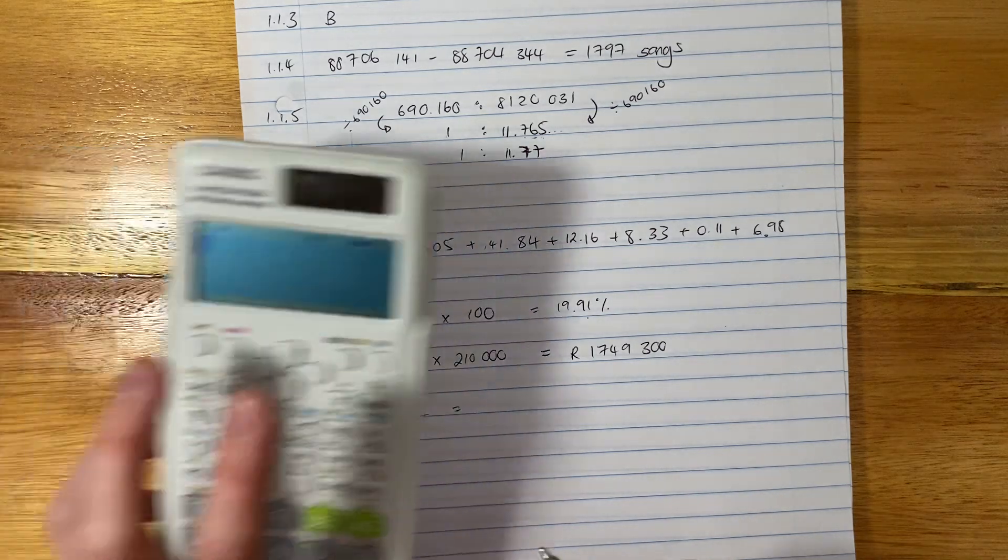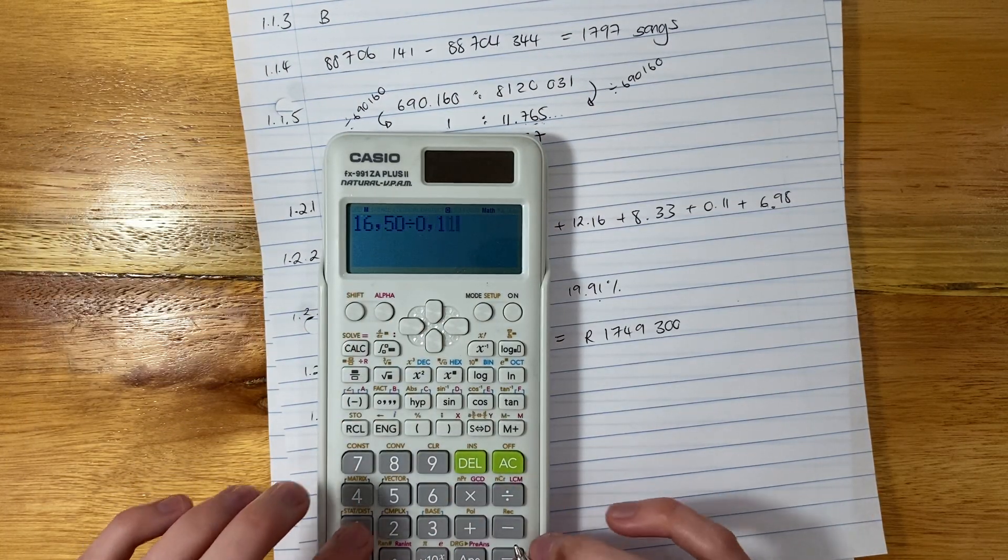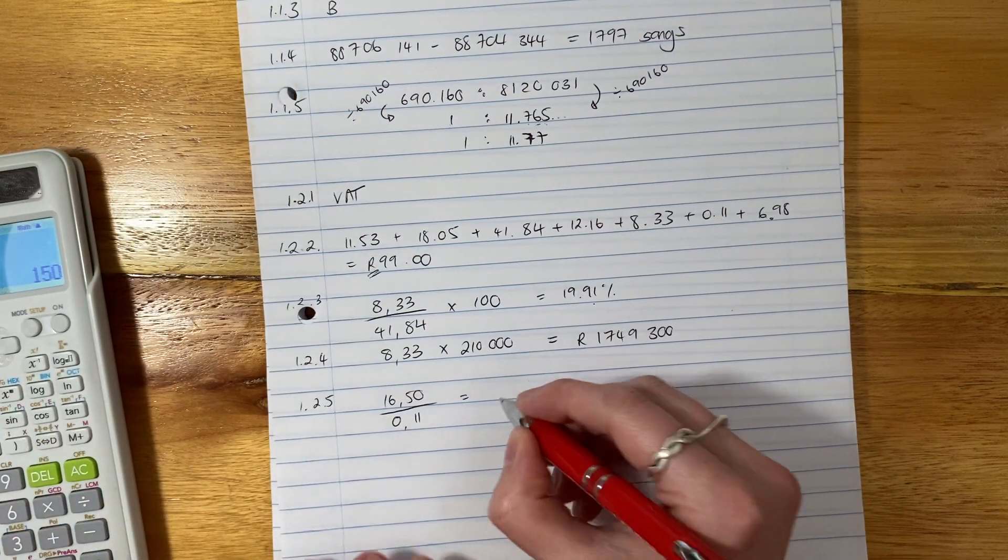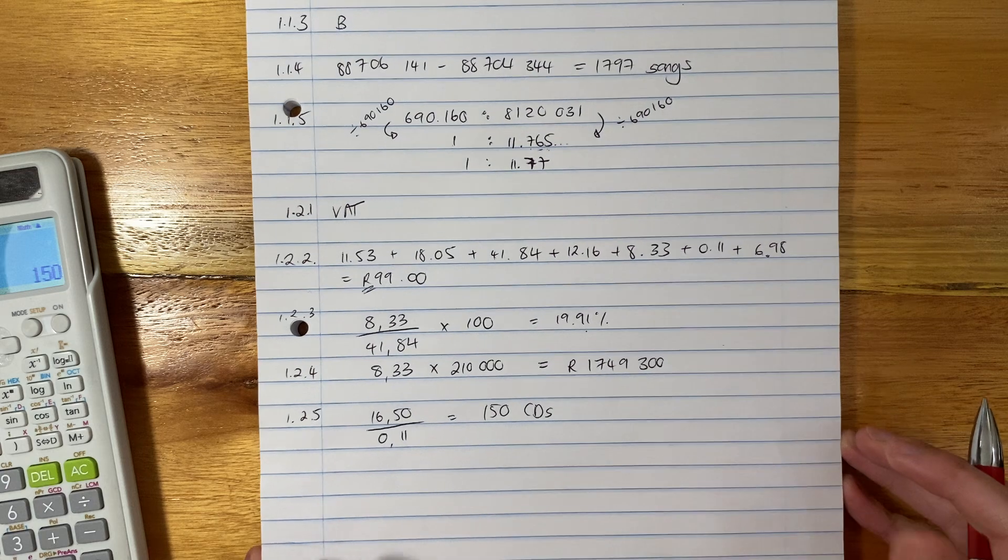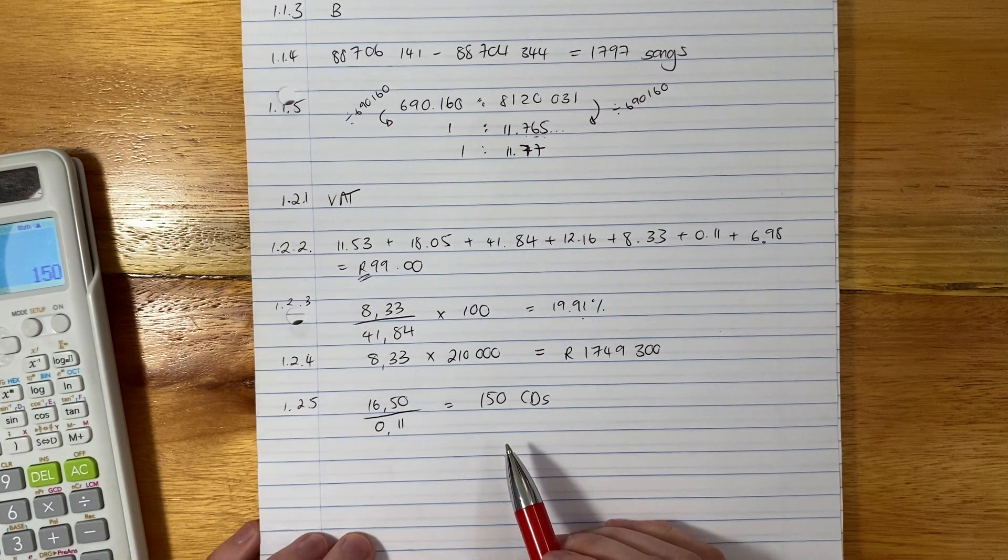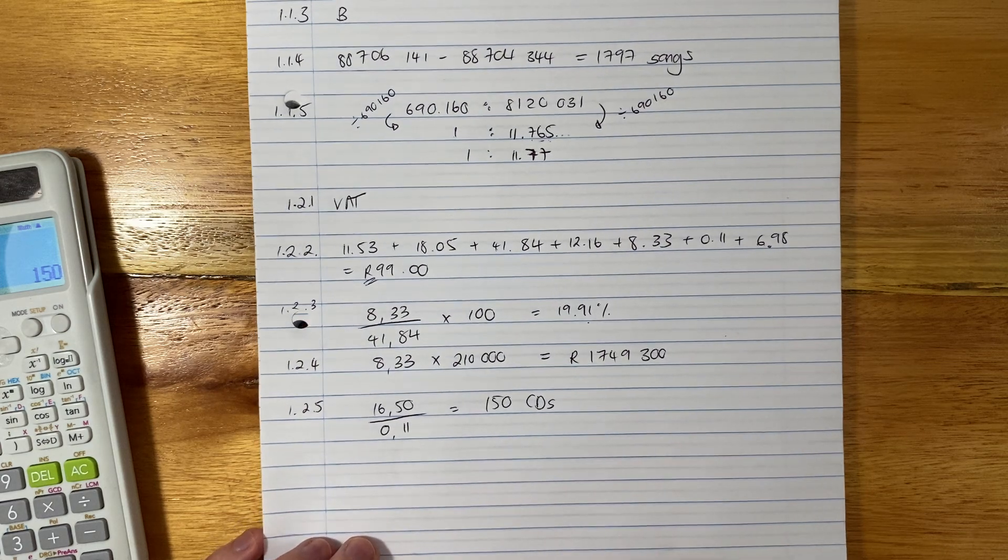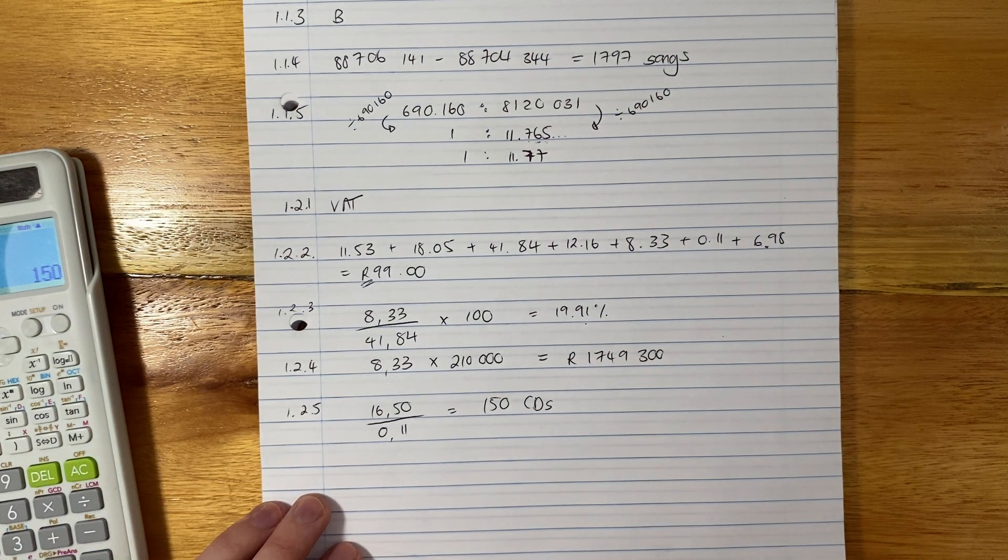And it is 150 CDs. Now, it's good that it's a whole number and there's no decimals because you can't sell half a CD, right? So that's important. Like a good little check there. Let's move on to the next question.